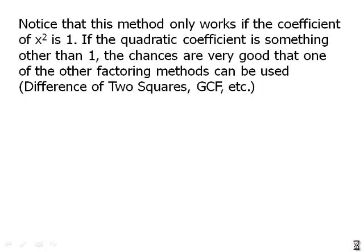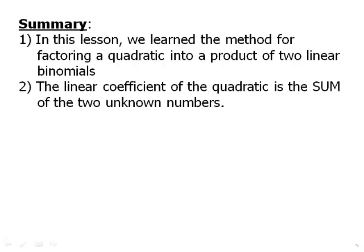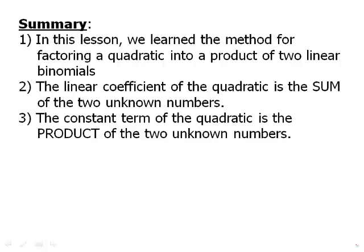And that's what we'll talk about in our next video. In this lesson, we learned the method for factoring a basic quadratic into a product of two linear binomials. The linear coefficient of the quadratic is the sum of the two unknown numbers. And the constant term of the quadratic is the product of the two unknown numbers.